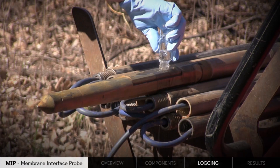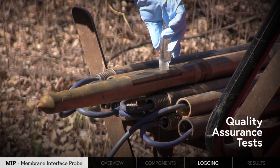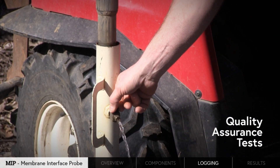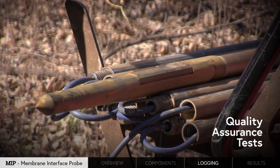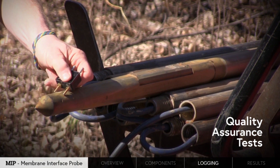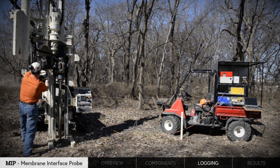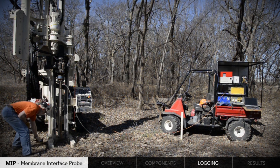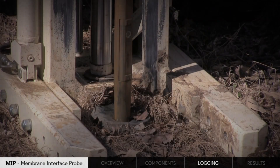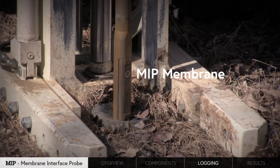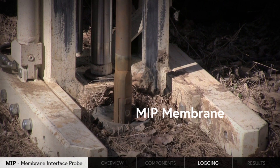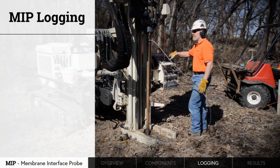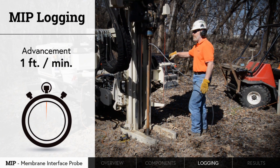Once the equipment is set up in the field, quality assurance tests of the sensors on the probe are performed before and after each log to validate the equipment is generating accurate data. Depth is recorded by connecting a depth potentiometer to the unit. The log is started once the MIP membrane is even with the ground surface. Standard advancement of the probe is at a rate of one foot per minute.